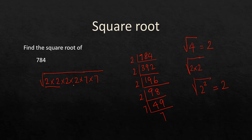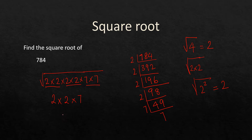On that basis, for every pair of 2s we take one 2 out, and for the pair of 7s we take one 7 out. So the answer is 2 × 2 × 7 = 28. Therefore the square root of 784 is equal to 28.